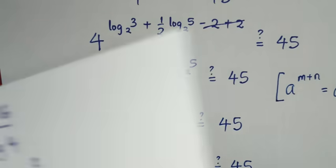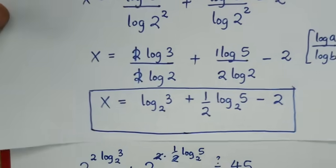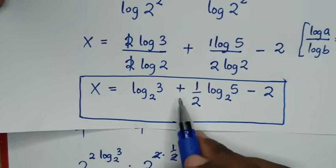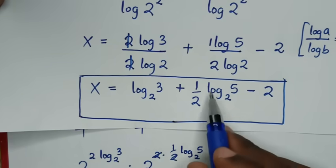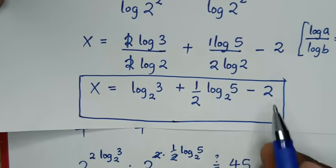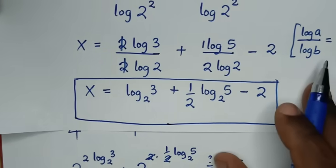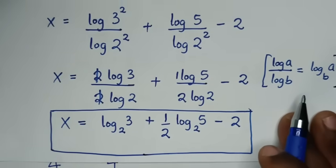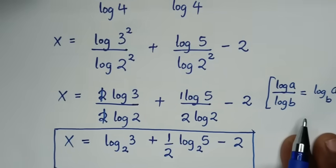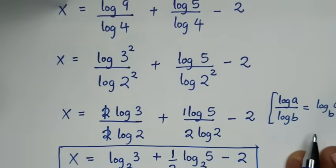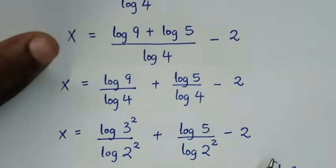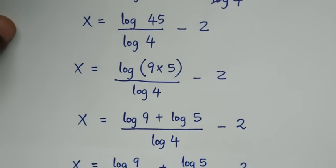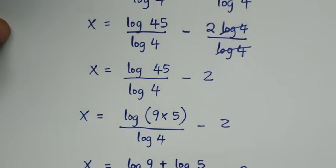The value of x is log of 3 base 2 plus a half log of 5 base 2 minus 2. Thank you. Subscribe to my channel and see you in the next video. Bye-bye.